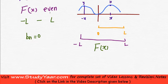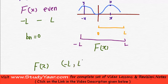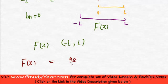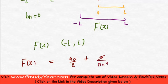Therefore, your Fourier series for f(x) in minus L to L is equal to what? It is equal to a0 by 2 plus summation n is equal to 1 to infinity an cos n pi x by L.